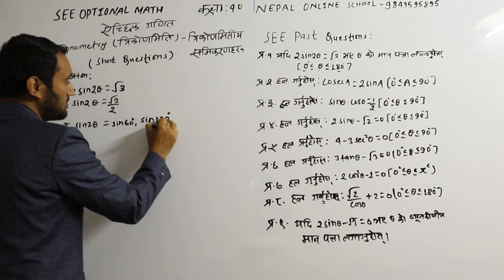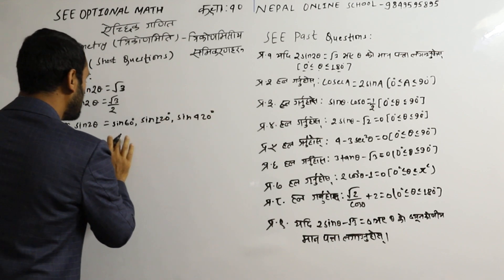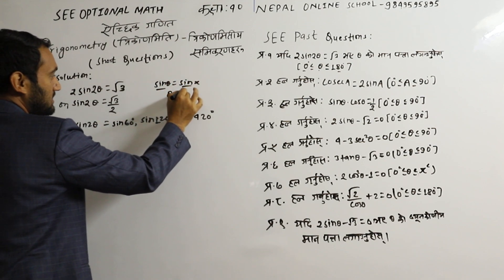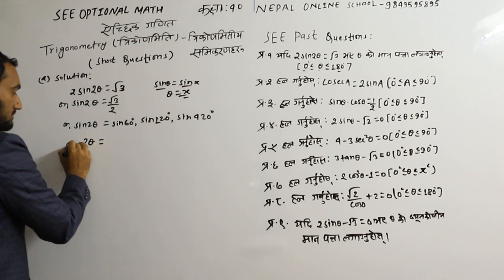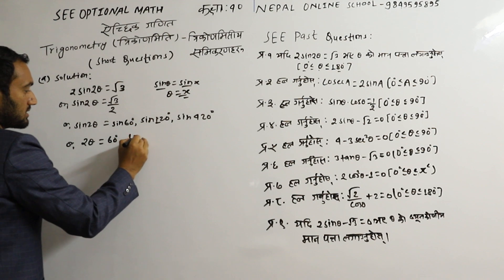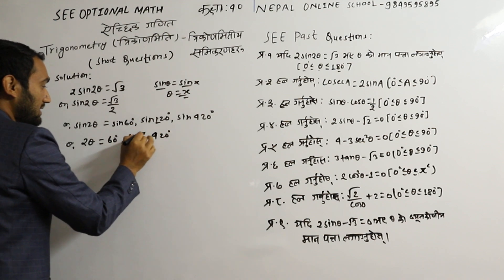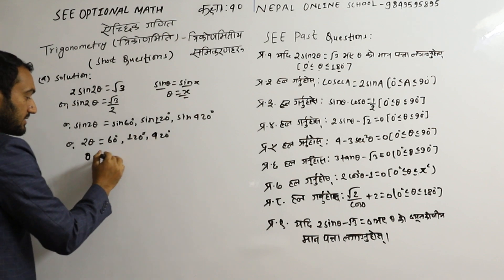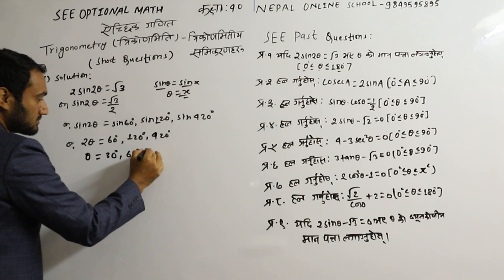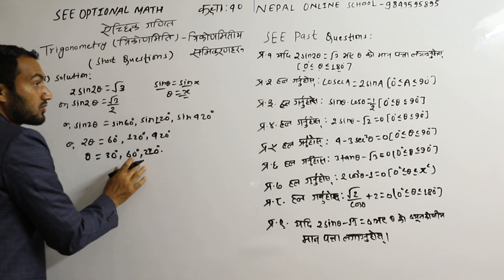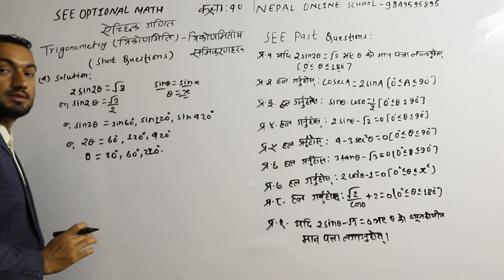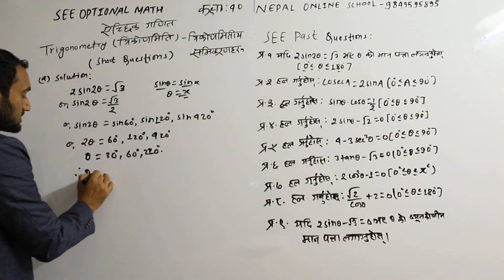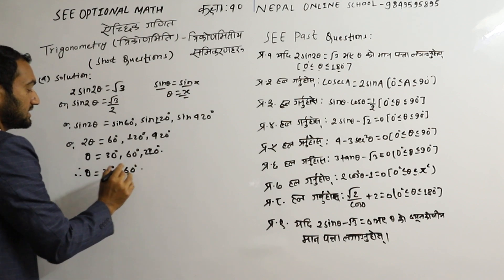We write sin2θ = sin60° or sin120° or sin420°. Since sinθ = sinx means 2θ equals x, the answer is 2θ = 60° or 120° or 420°. Dividing by 2: θ = 30°, 60°, or 210°. Since θ is between 0° and 180°, the solution is θ = 30° or 60°.